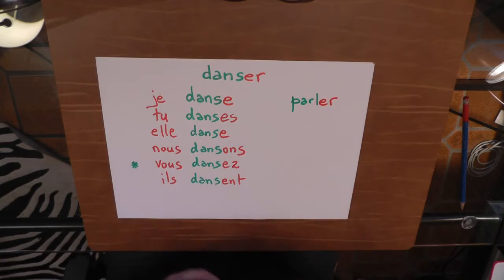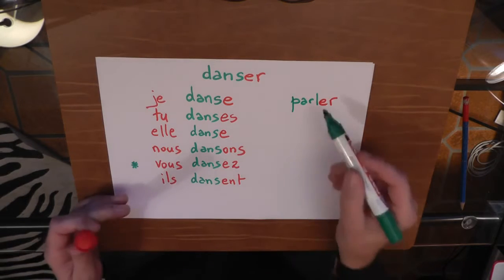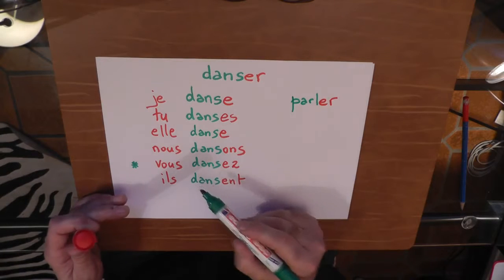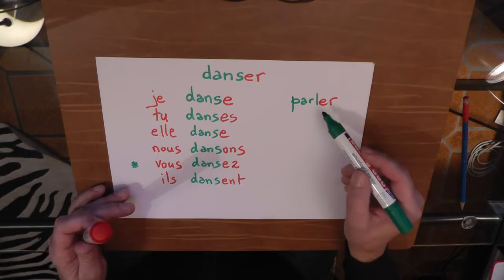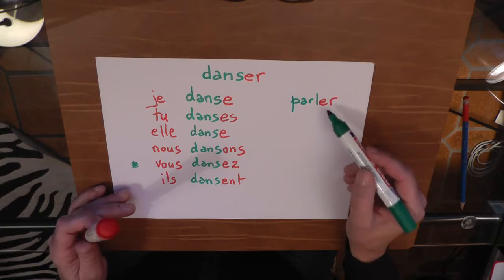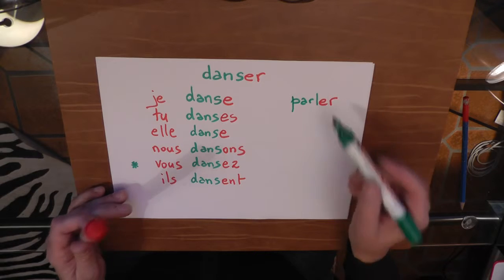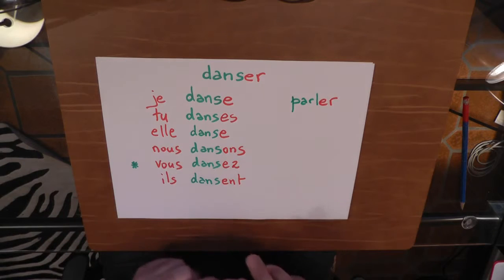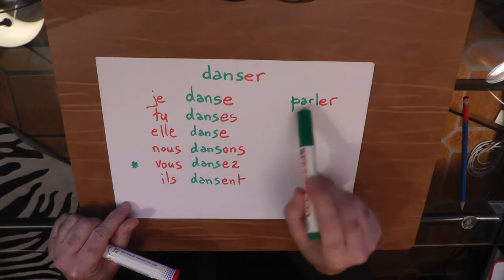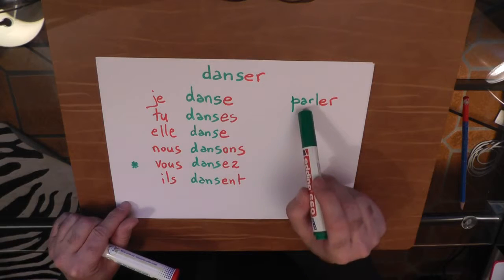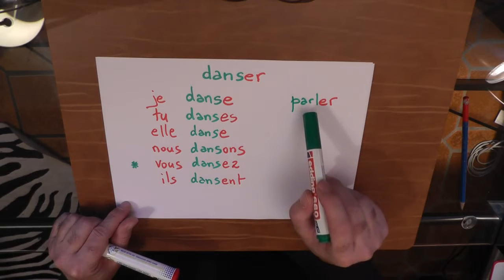You can use 'parler' exactly the same way: je parle, tu parles, elle parle, nous parlons, vous parlez, ils parlent. That means you just have to replace the green part — we call it the radical — and use the same red endings.